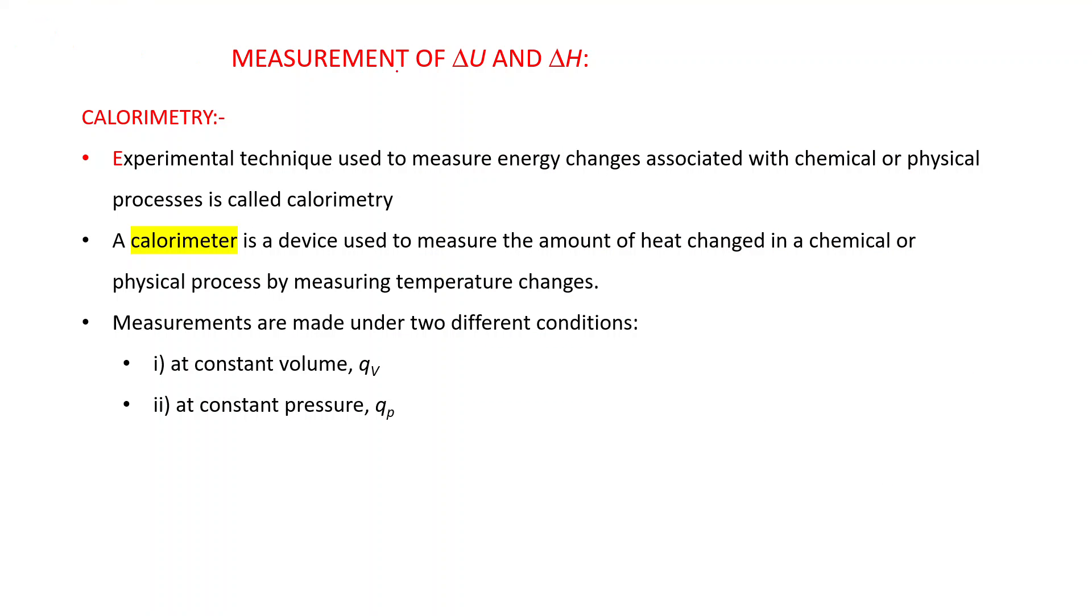Now measurement of delta U and delta H. First one, calorimetry. Experimental technique used to measure energy changes associated with chemical or physical processes is called calorimetry. A calorimeter is a device used to measure the amount of heat changed in a chemical or physical process by measuring temperature changes.